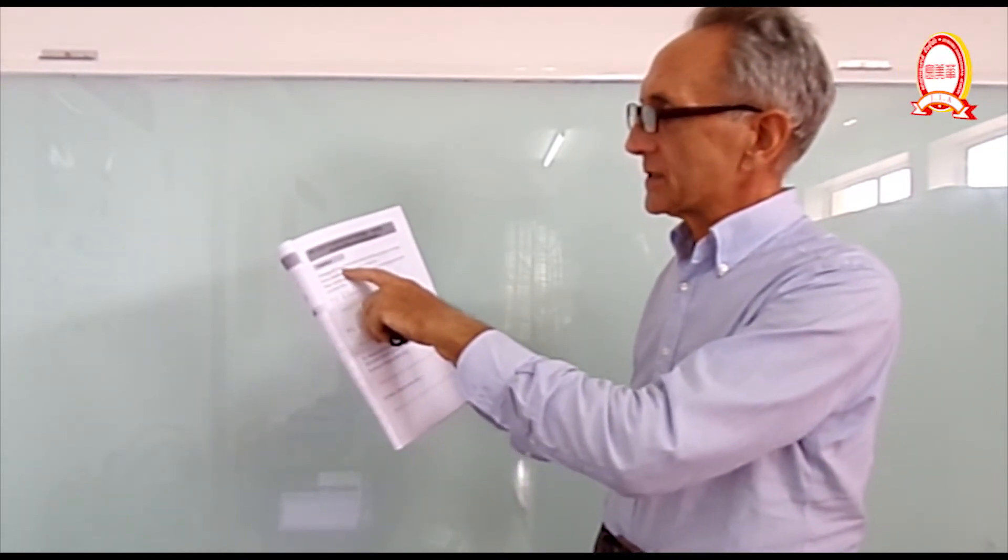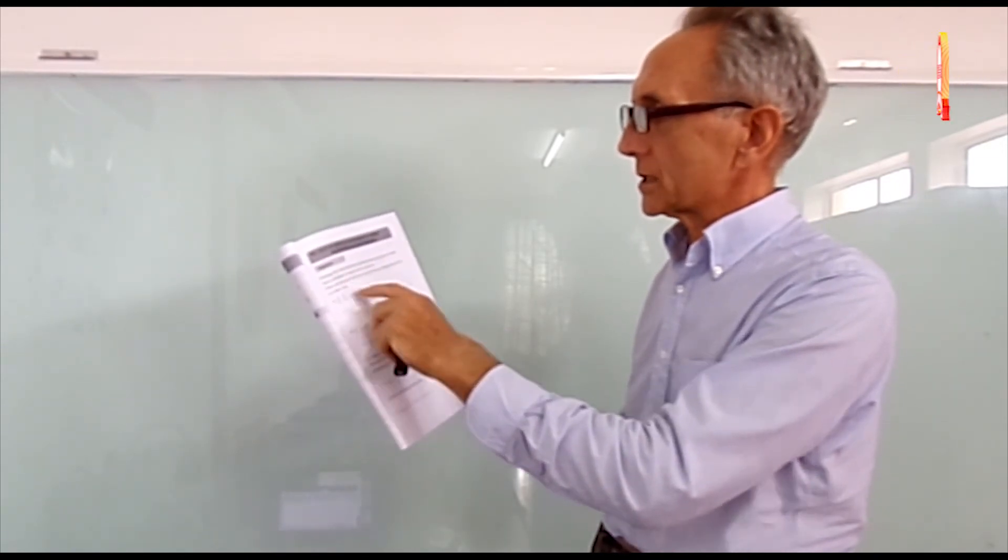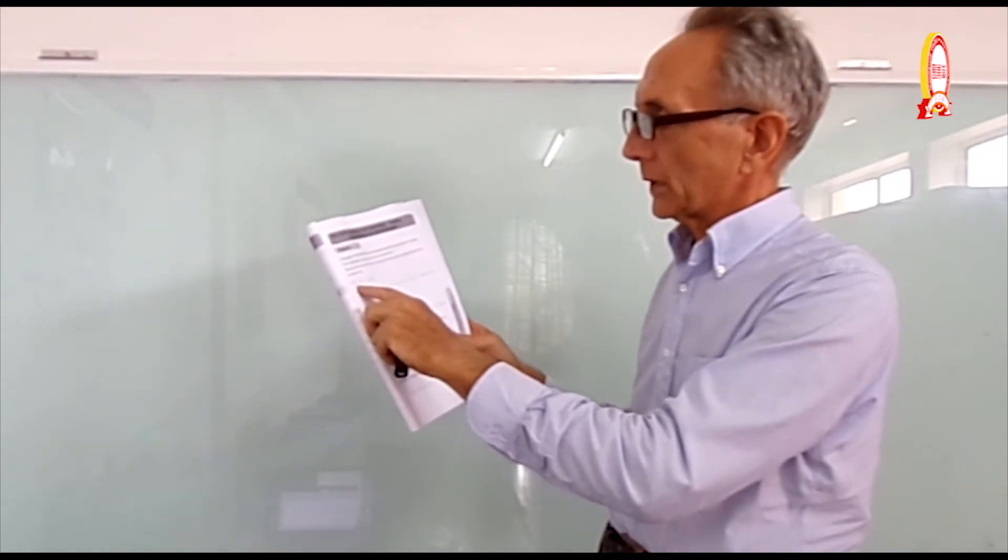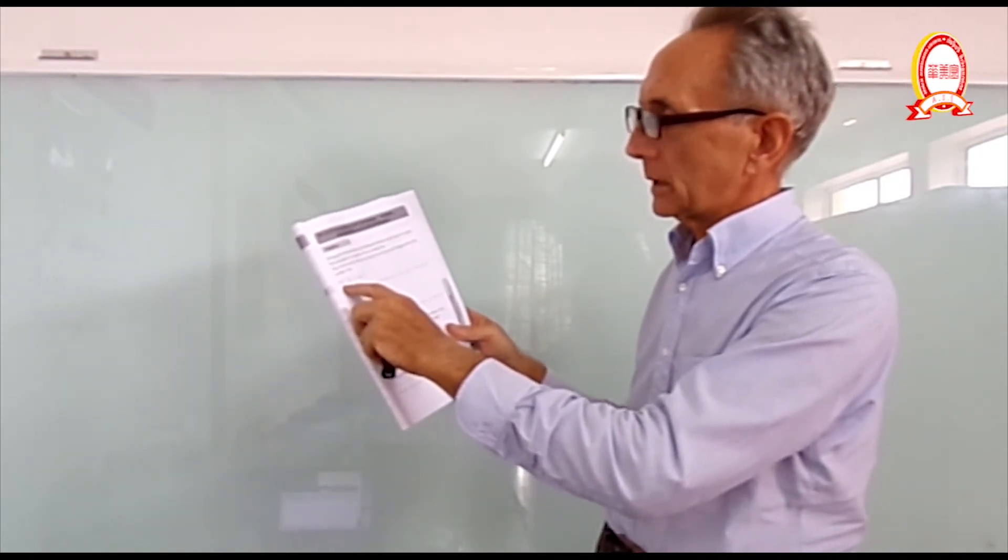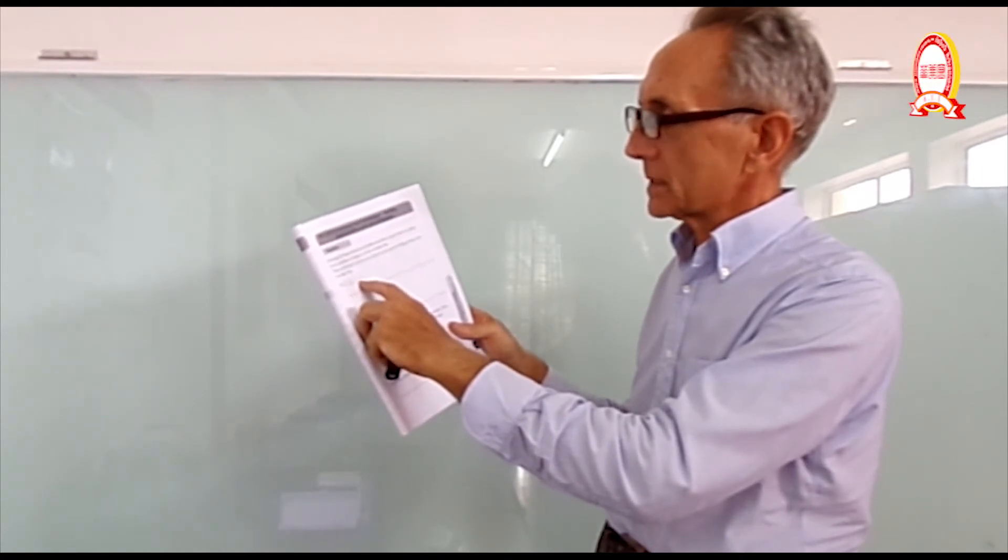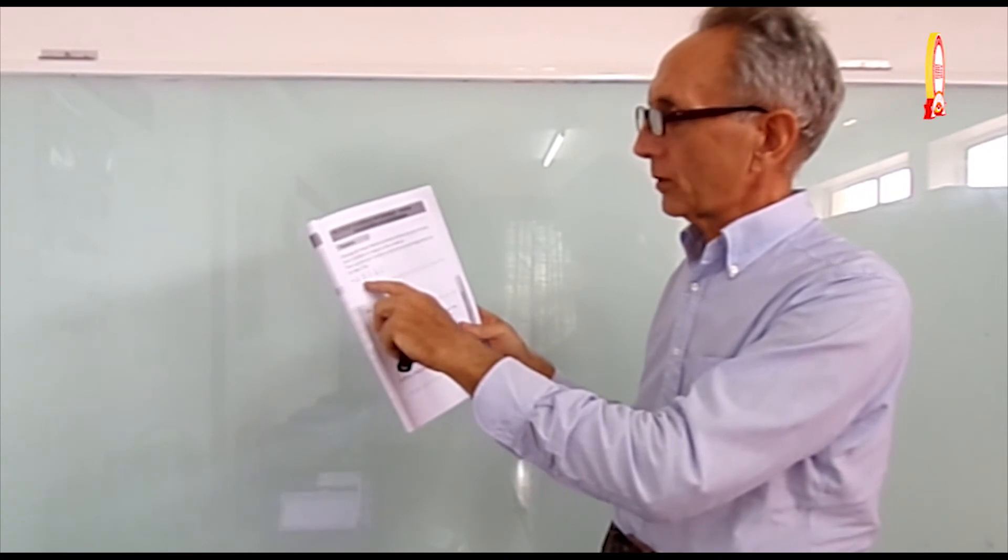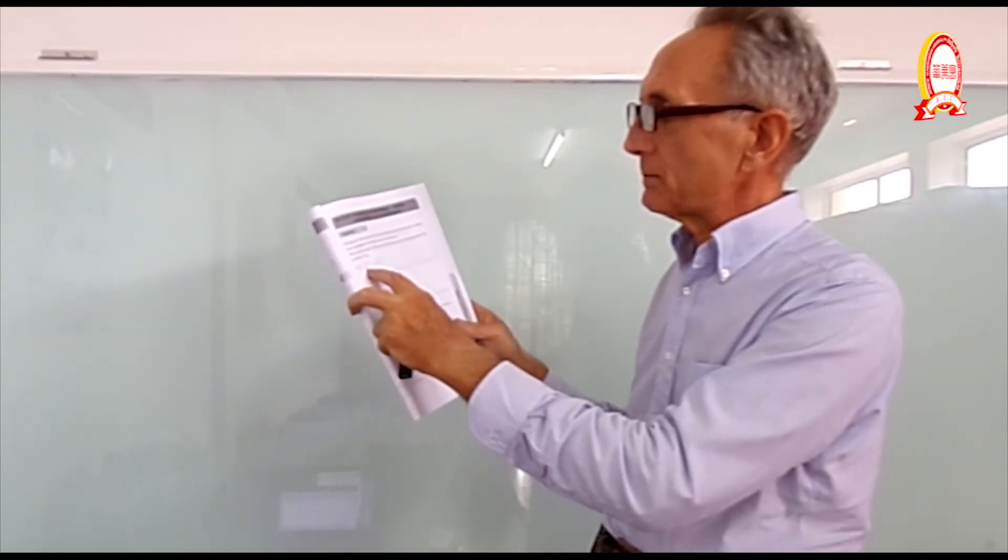Change these fractions to tenths, and then write them in order from smallest to largest. So here you have 2 fifths, 3 tenths, 1 tenth, 7 tenths and 1 fifth.